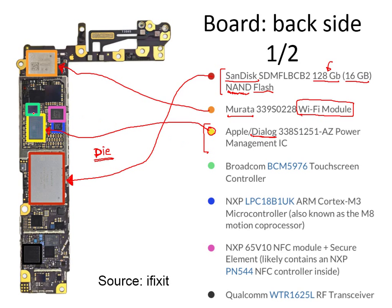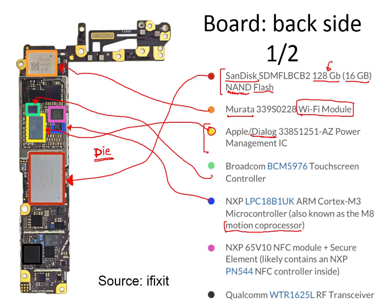There is a touch screen controller chip by Broadcom, and a motion coprocessor. The motion coprocessor processes information from the touch screen and sensors and provides input to the main processor. It is a separate chip here, but in the iPhone 6s the motion coprocessor is integrated inside the main processor, so this chip goes away.